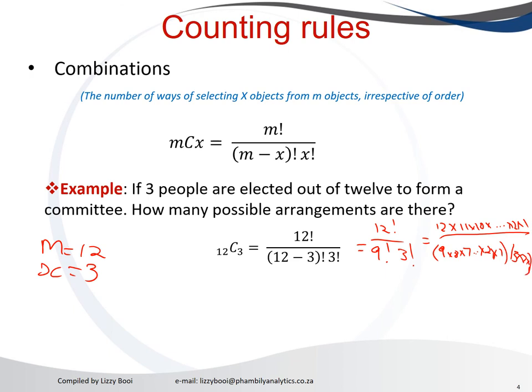And that will give you, if you simplify all of it, it will give you those values. 479,001,600 divided by 2,177,280, if we simplify it, gives us 220. So therefore, if we have to select 3 people from 12 committee members to form a committee, then there are 220 ways of selecting those people.